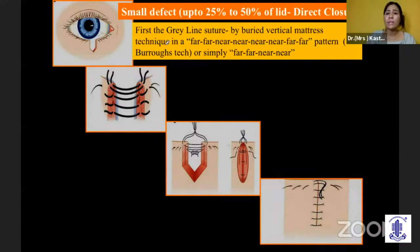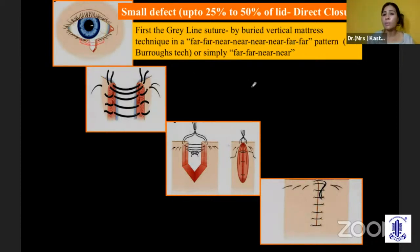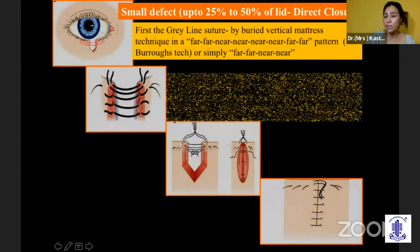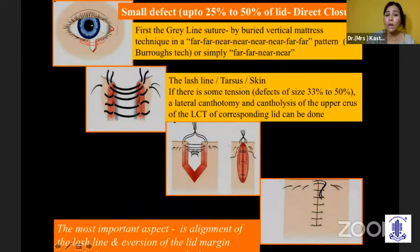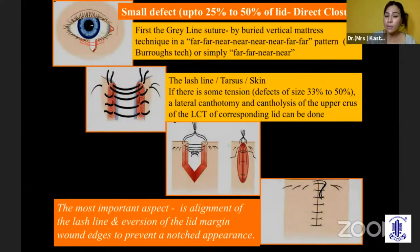Simply you do a far-far-near-near incision — three millimeters from the incision, one millimeter deep, giving a far bite, then near-near. You put the first suture in the gray line, then followed by a suture in the lash line, the tarsus, and the skin. You should always remember that the lid margin should be everted in order to prevent a notch appearance in the postoperative period.